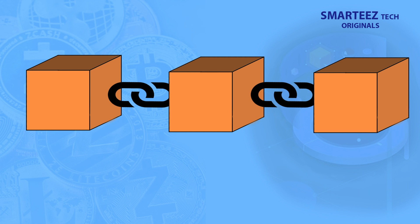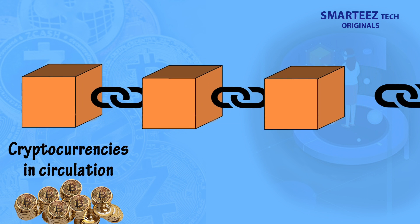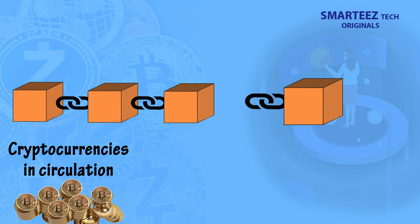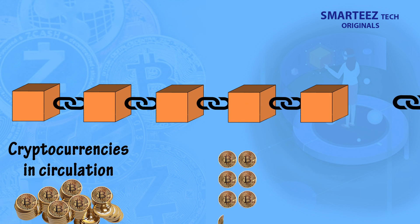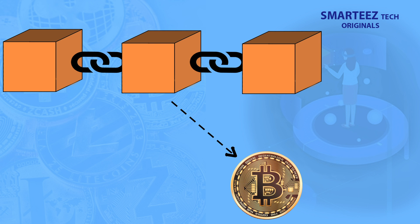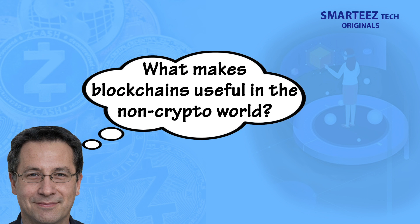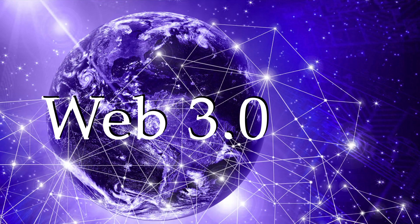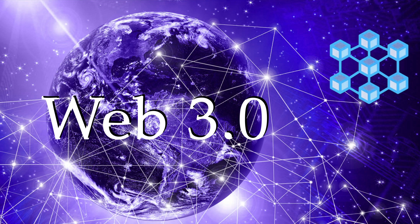Though blockchain technology found its first application by powering Bitcoin, blockchain doesn't find its value only for cryptocurrencies. One of the reasons why people tend to confuse blockchain with cryptocurrencies is because blockchains are needed to power the cryptocurrencies. In simple language, cryptocurrencies need blockchain technology, but blockchain can exist without cryptocurrencies. If blockchains are used for applications outside of cryptocurrencies, what could be the reasons? And how will the validators of the transactions be paid? First, let's look at the reason why Web 3.0 is based on blockchains.